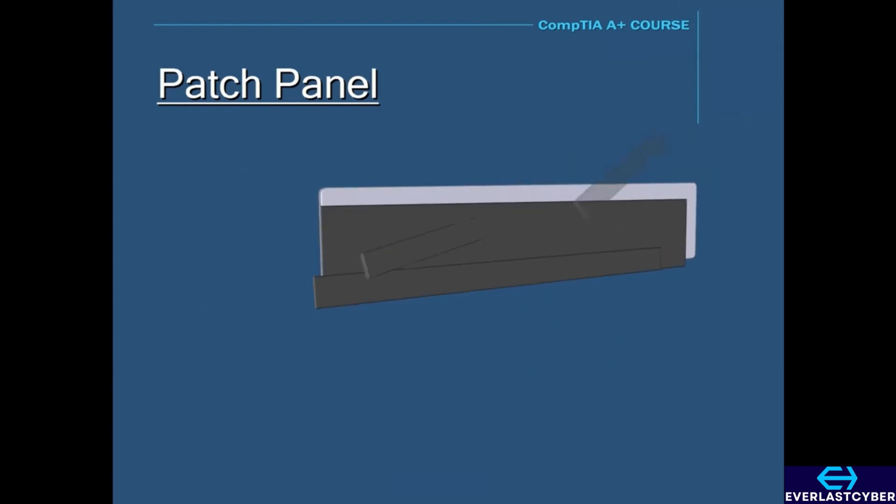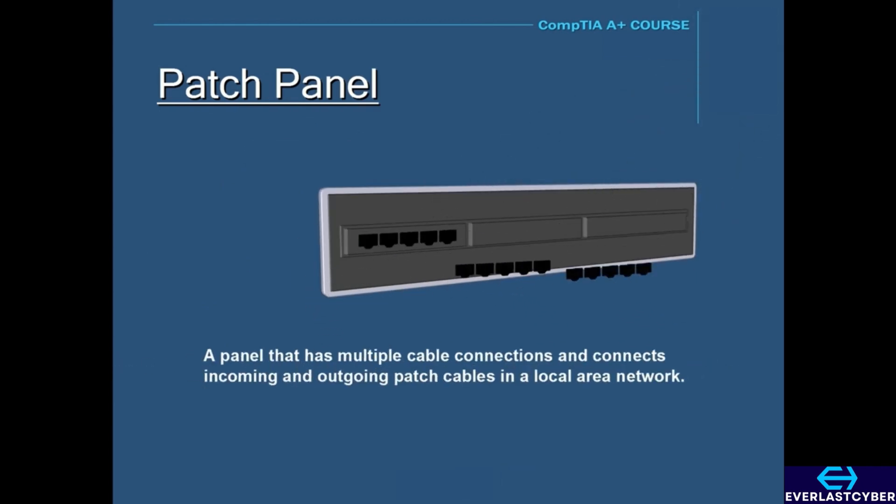A patch panel is a panel that has multiple cable connections and connects incoming and outgoing patch cables in a local area network. It allows network administrators the convenience of arranging or rearranging circuits if necessary. For instance, here we have a patch panel that has several UTP patch cables attached.